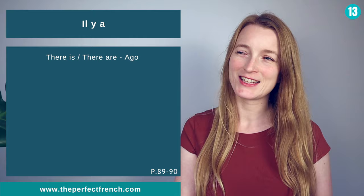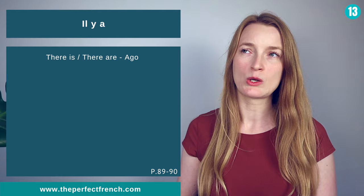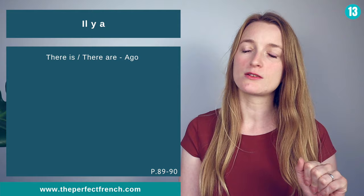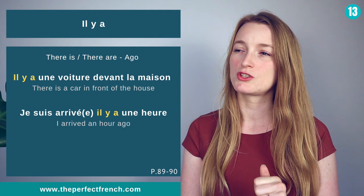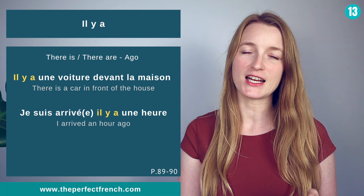Number 13: il y a. Il y a in French can mean there is or there are — we don't change the verb for plural or singular. It can also mean ago. Il y a une voiture devant la maison. Je suis arrivée il y a une heure — an hour ago.